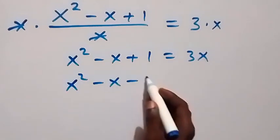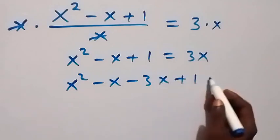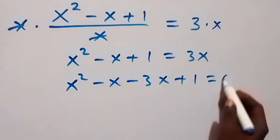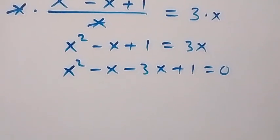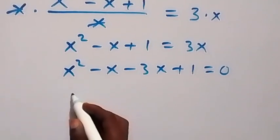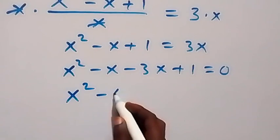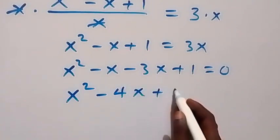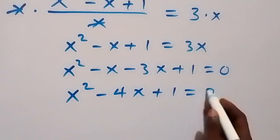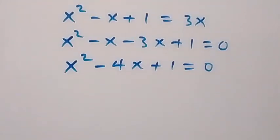From here, let's bring everything to one side. We get x squared minus x minus 3x plus 1 equals 0, which gives us x squared minus 4x plus 1 equals 0. Now we have a quadratic equation which we can solve using the formula.